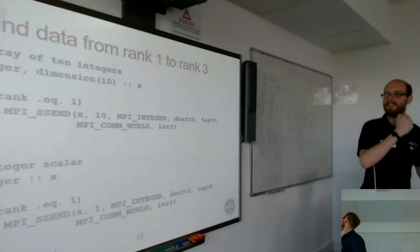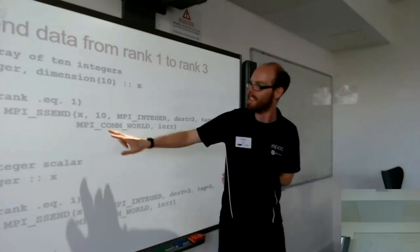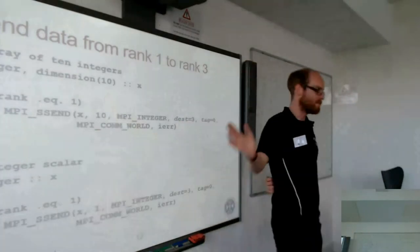For an integer, where it's just a single value with C, we just basically have to send X, but here we have to pass in the address of X because if you think with a C array, it's really just a pointer. So you just need to make sure you pass in the address if you're putting through a single value.